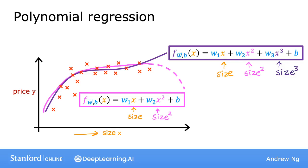I just want to point out one more thing, which is that if you create features that are these powers, like the square of the original features like this, then feature scaling becomes increasingly important. So if the size of the house ranges from say 1 to 1000 square feet, then the second feature, which is the size squared, would range from 1 to a million.